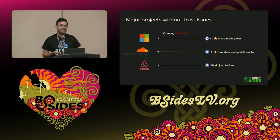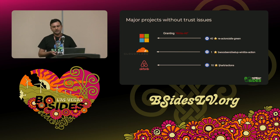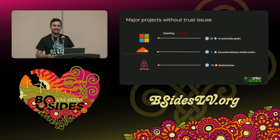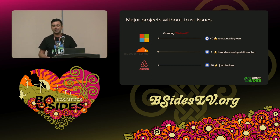Another interesting figure I found: 94% of actions actually use up to three scopes out of 15 available, leaving the more dangerous ones aside — issues, pull requests, and contents read being the more popular ones. And this next slide is the essence of this research. We can see open-source projects we all use — Microsoft, Cloudflare, and Airbnb — granting write-all permissions on all scopes to a benign action maintained by a private developer with a low number of stars.